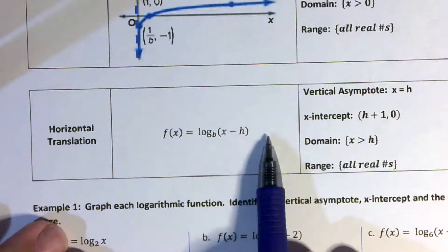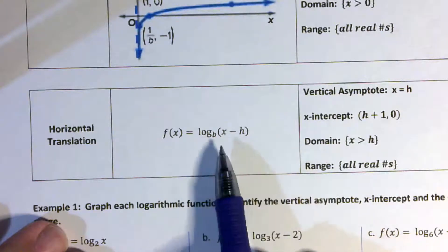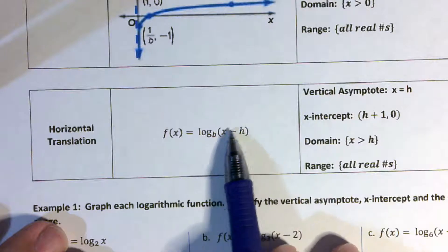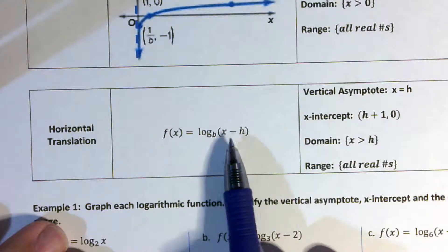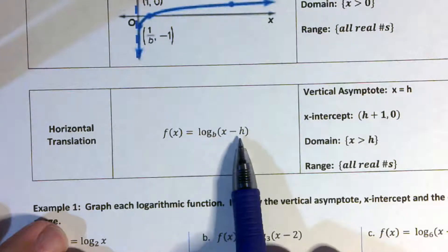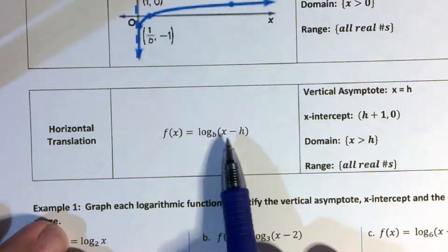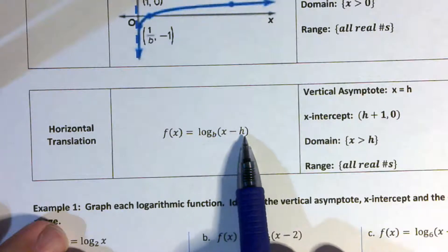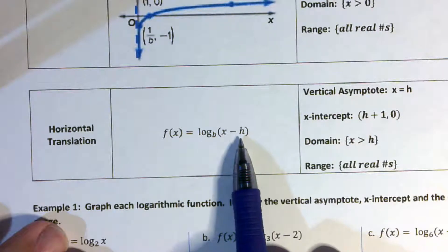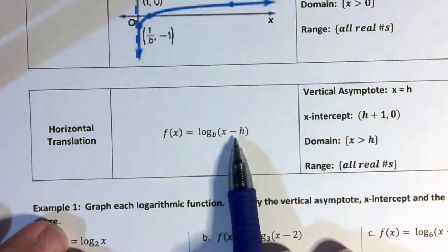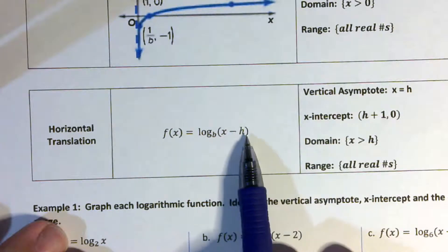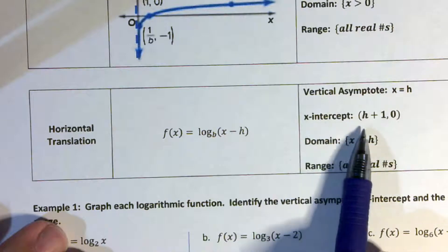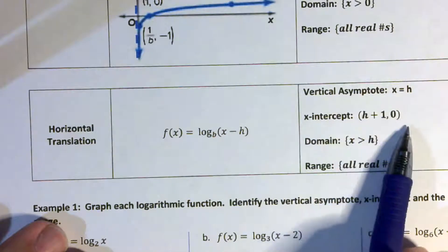This is the basic form of a logarithm — notice there's no plus something on the outside. The vertical asymptote is going to be h. Notice that the formula is x minus h, so if it's x minus 2, the vertical asymptote is x equals 2, not negative 2. The x-intercept is going to be h plus 1, so if it's x minus 2, the x-intercept is 2 plus 1, or (3, 0).